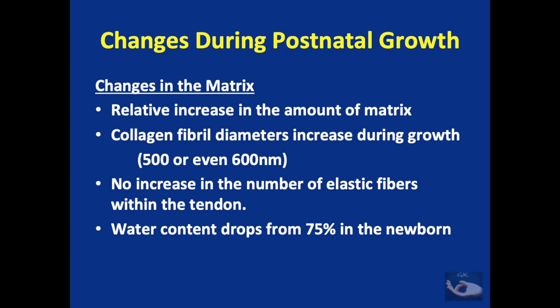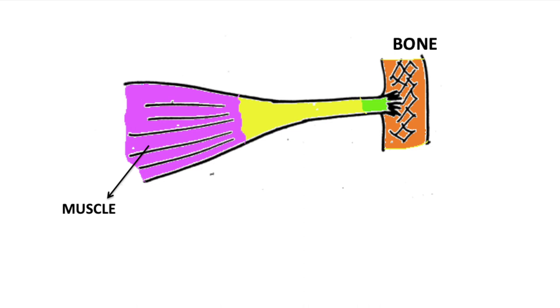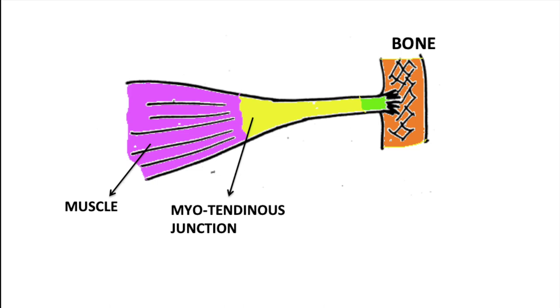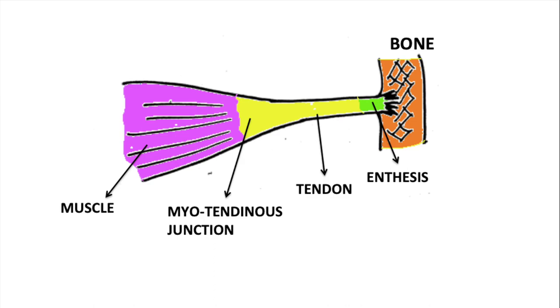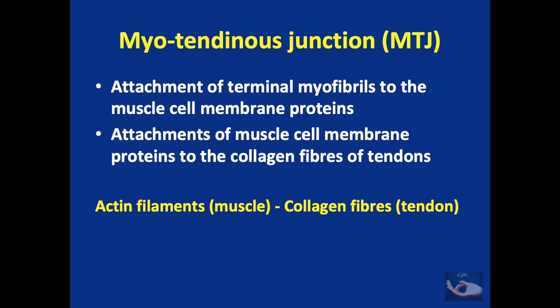When surgical attachment of the flexors is done at the myotendinous junction or the osteotendinous junction, we need to remember the importance of these areas and their role in transmitting forces. The myotendinous junction is very important because it is the place where tension generated by muscle fibers is transmitted from intracellular contractile proteins — that is actin and myosin — to extracellular connective tissue proteins, which are the collagen fibrils of the tendon. This is possible through the attachment of terminal myofibrils to muscle cell membrane proteins and their attachment to the collagen fibers of the tendons.